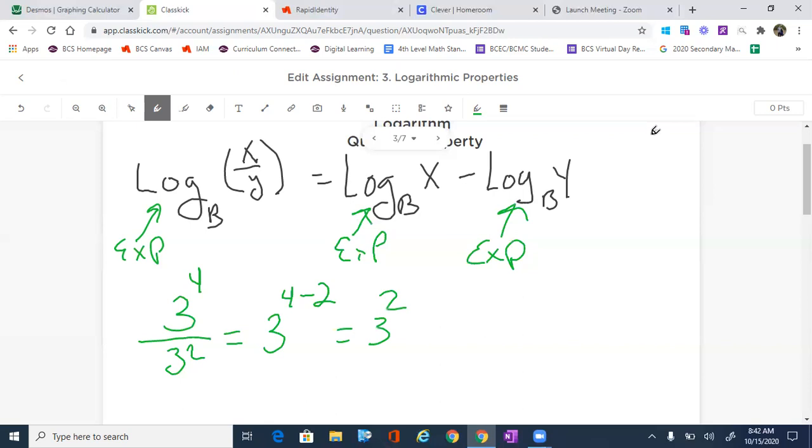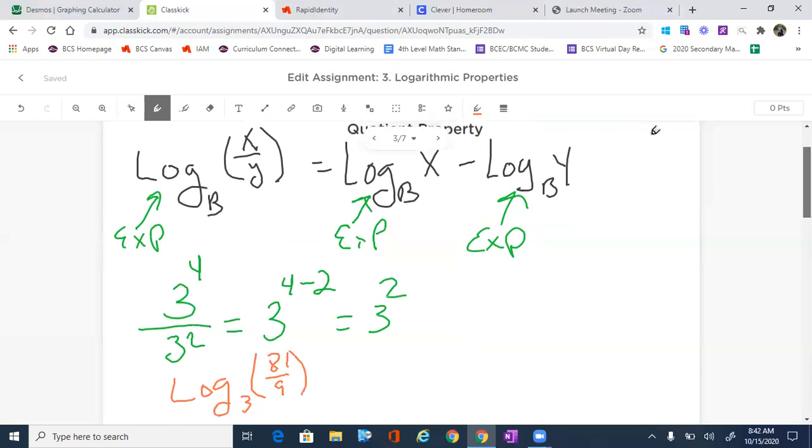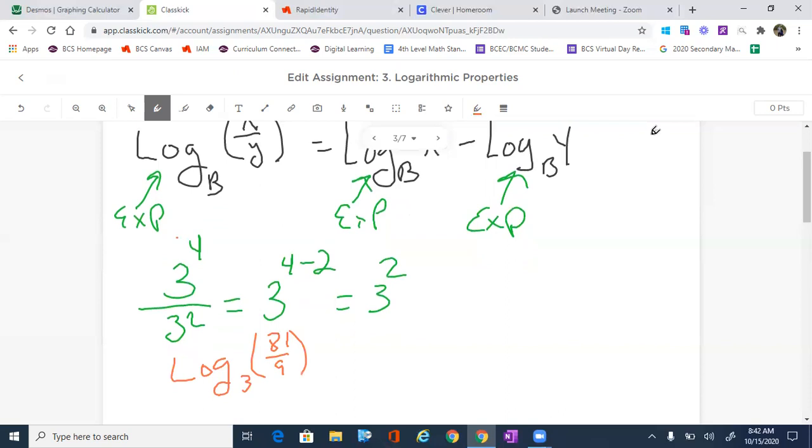So let's take and write log, I'm going to make up a problem here. Let's look at log base 3, 81 over 9. Now you're wondering, did you just make that up? No, I didn't, because 81 is simply 3 to the 4th power, and 3 squared is 9.